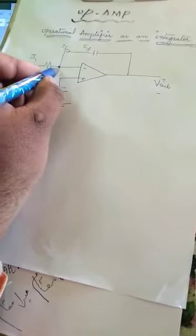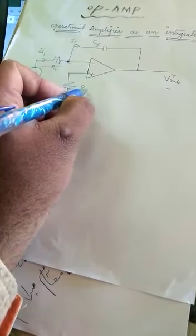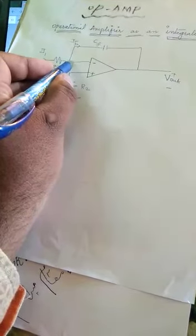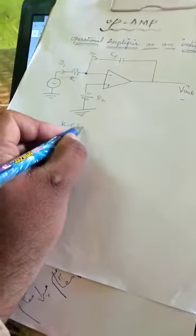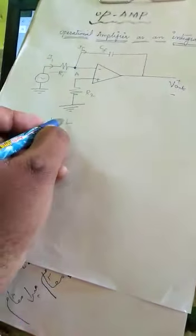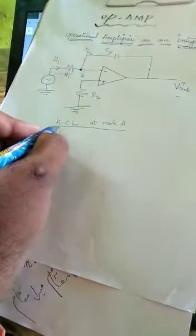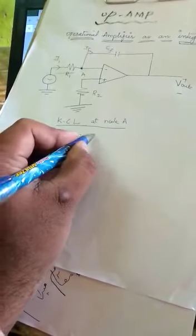At this point if we apply Kirchoff current law, which states that entering current equals leaving current, let us find the current across this junction point. I will apply KCL at node A. So input current I1 equals the feedback current IF.